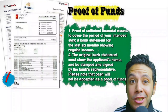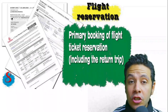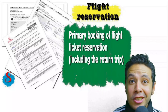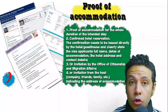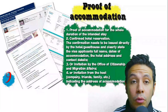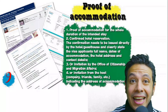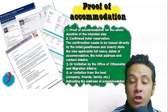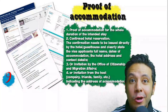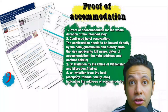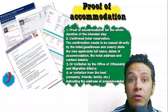You should also provide a flight reservation — it could be an initial booking, but in some cases a confirmed booking is required, and the reservation must include a return ticket. You will also need proof of accommodation: a confirmed hotel reservation, an invitation from a host, or an invitation from an organization. An initial hotel booking is acceptable in most cases. The hotel name, address, and contact number must be mentioned. If invited by a person, the invitation letter should be mailed to the embassy or submitted by you with a copy of the inviting person's passport.